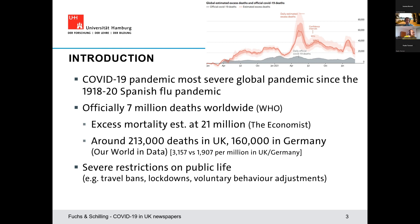In addition to the death toll, there were also severe restrictions on public life, such as travel bans and lockdowns. Importantly, there were also voluntary behaviour adjustments — people adjusted how often they went outside, how often they mingled in public life, and how often they visited doctors' offices. This is going to be important in the following.